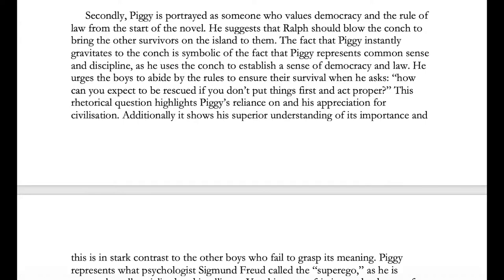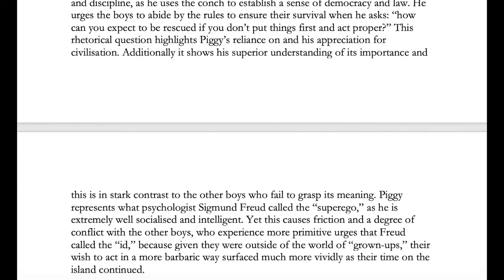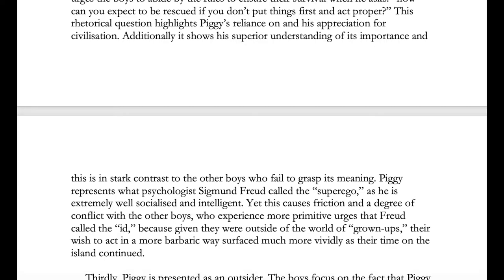Secondly, Piggy is portrayed as someone who values democracy and the rule of law. From the start of the novel, he suggests that Ralph should blow the conch to bring the other survivors to them. The fact that Piggy instantly gravitates to the conch is symbolic of the fact that Piggy represents common sense and discipline, as he uses the conch to establish a sense of democracy and law. He urges the boys to abide by the rules to ensure survival, asking, 'How can you expect to be rescued if you don't put things first and act proper?' This rhetorical question highlights Piggy's reliance on and appreciation for civilization, and his superior understanding of its importance — in stark contrast to the other boys who fail to grasp its meaning. Piggy represents what Freud called the super ego: extremely well socialized and intelligent, yet this causes friction with the other boys who experienced more primitive urges — the id — as their wish to act in a more barbaric way surfaced much more vividly as their time on the island continued.